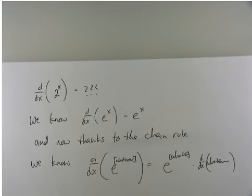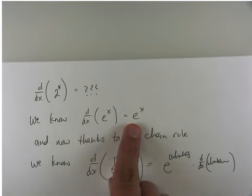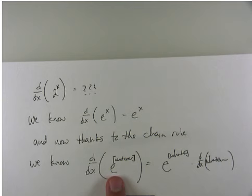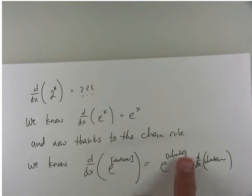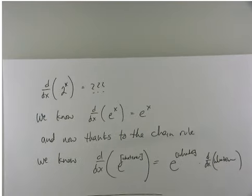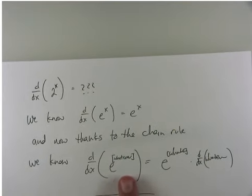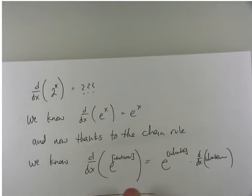Thanks to the chain rule, I know a little bit more than just plain old e to the x. I know that the derivative of e to the whatever is e to the whatever times the derivative of that whatever. The derivative of e to the something is e to the something, d something. So more complicated expressions with base e — I'm happy with. Or happier than I used to be.